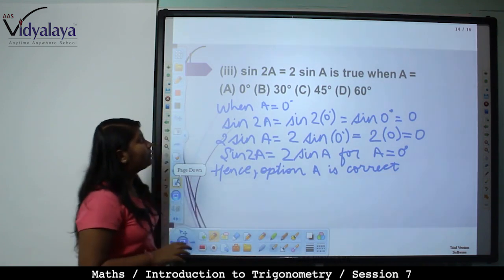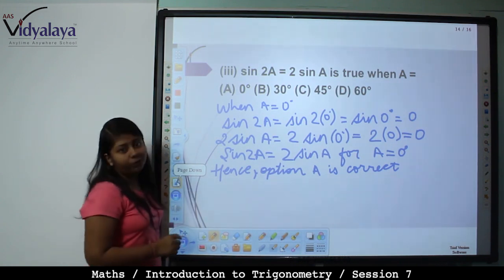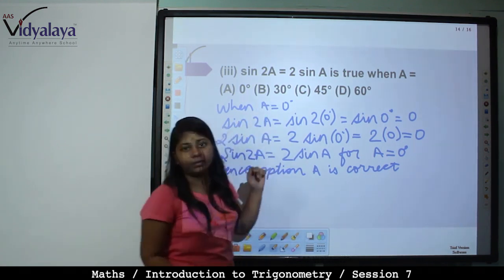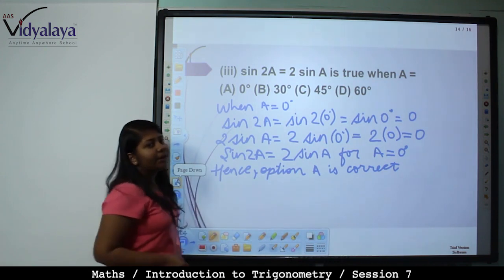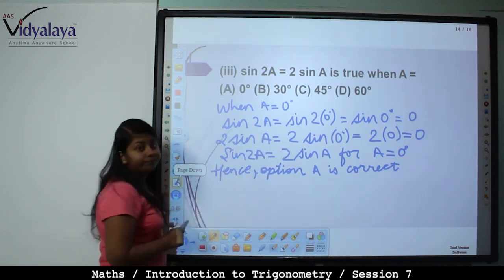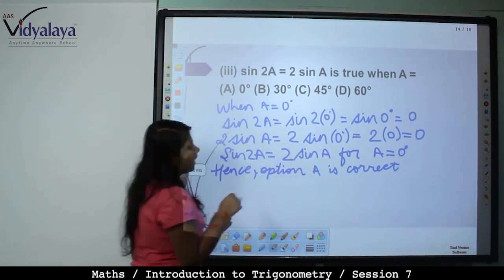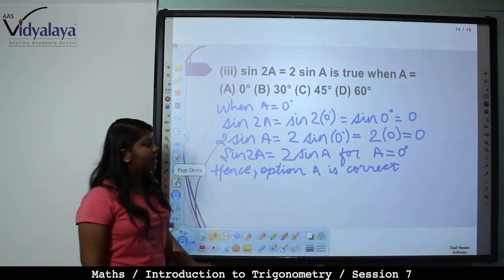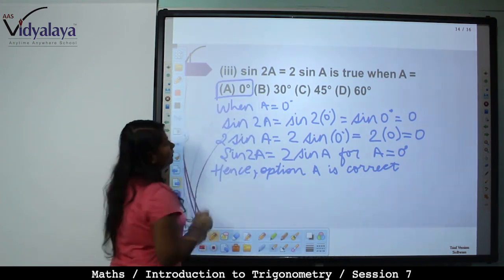Sin 2A equals 2 sin A is true when — you need to substitute all four values. Starting with A equals 0: sin 2A is sin 0, value is 0. And 2 sin A is 2 into sin 0, which is 2 into 0, that is 0. So sin 2A equals 2 sin A holds for A equals 0. Hence option A is correct.